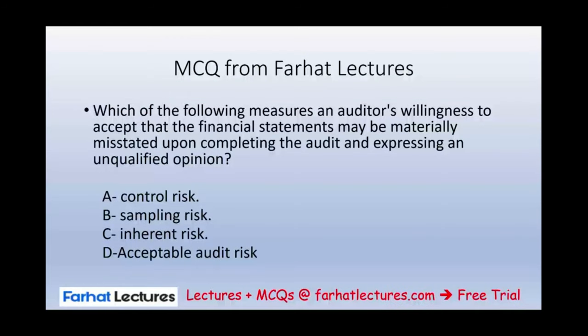Let's look at a multiple choice question to consolidate our understanding of audit planning concepts. Which of the following measures an auditor's willingness to accept that the financial statement may be materially misstated upon completing the audit and expressing an unqualified opinion? What do we call this risk when the auditor issues an opinion? Option A is control risk — control risk is when your internal control procedures may not, on a timely basis, detect and prevent material misstatement. Option B is sampling risk — sampling risk deals with the possibility of selecting the wrong sample that is not representative.